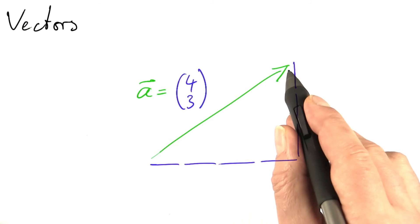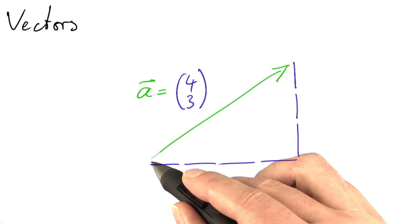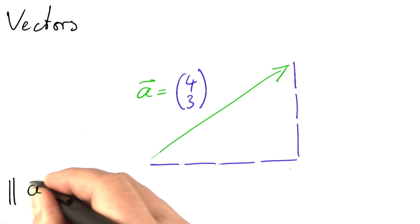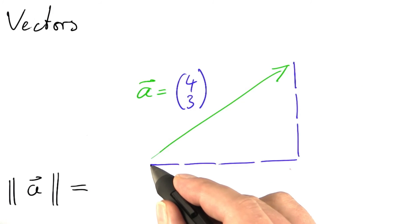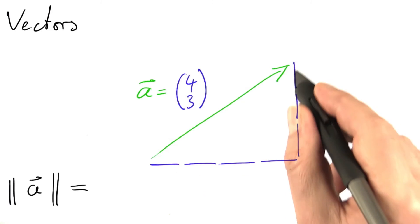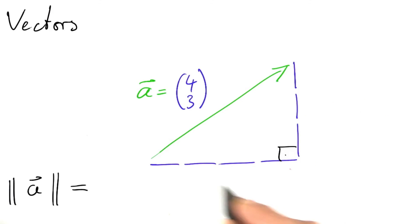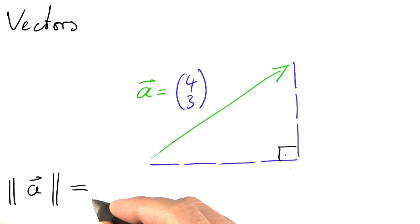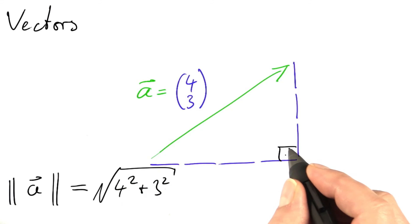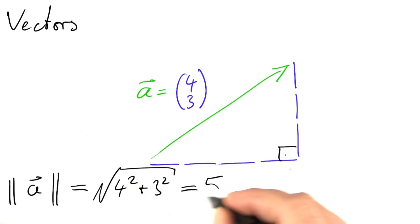The third operation that we can apply to all vectors is determining their lengths. I'm writing it like that with double bars. To determine the lengths, we can simply use the Pythagorean theorem. One leg of this right triangle is 4 units long, the other leg is 3 units long, which means that the hypotenuse is 4 squared plus 3 squared, square root, units long, which means 16 plus 9, 25, square root is 5 units.